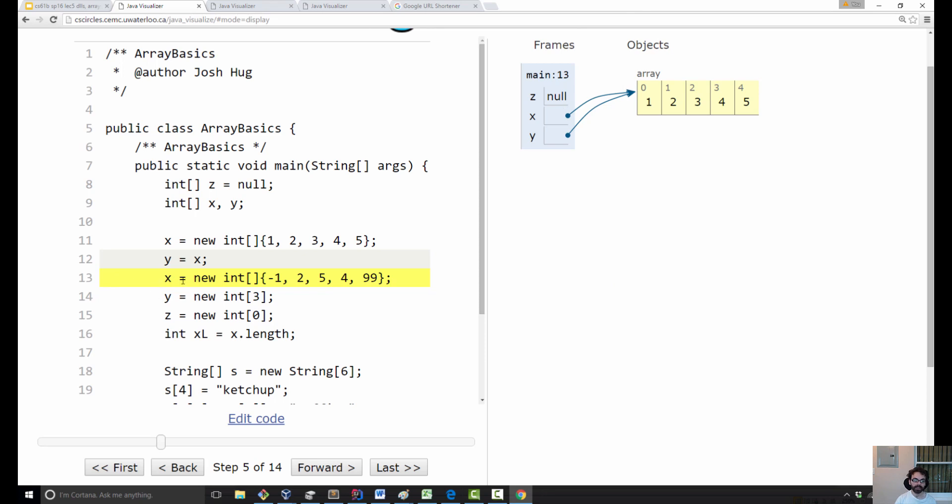Now we're going to take x, and we're going to replace these bits here with the address as returned by this next call to new. So this is, again, an array of size five. And now x gets the bits corresponding to the address of x.